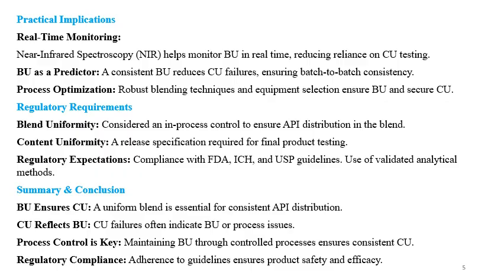Regulatory requirements for BU and CU: Blend Uniformity is considered an in-process control to ensure API distribution in the blend. Content Uniformity is a release specification required for final product testing. Regulatory expectations include compliance with FDA, ICH, and USP guidelines and the use of validated analytical methods.